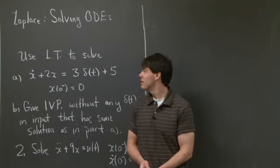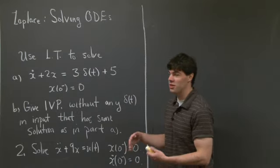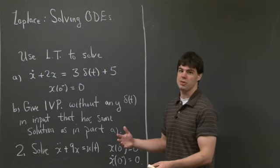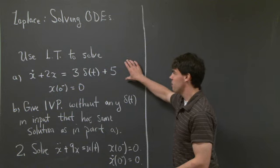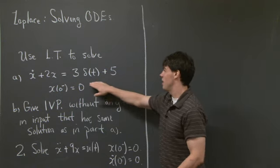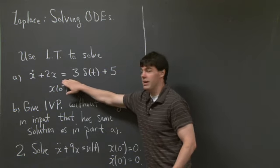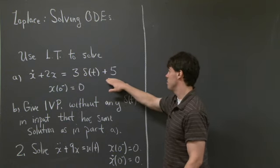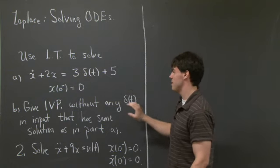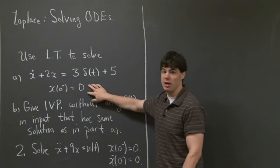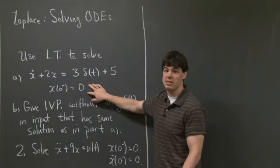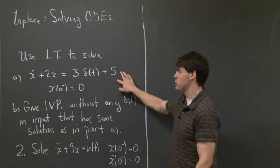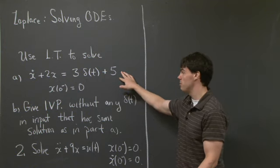Hi everyone, welcome back. Today we're going to take a look at solving differential equations using Laplace transforms. The problem we're going to look at is a simple ODE: x_dot plus 2x equals 3 delta of t plus 5 as a forcing on the right-hand side. We're going to look at rest initial conditions, x of 0 minus equals 0, and we're asked to use Laplace transforms to solve this initial value problem.